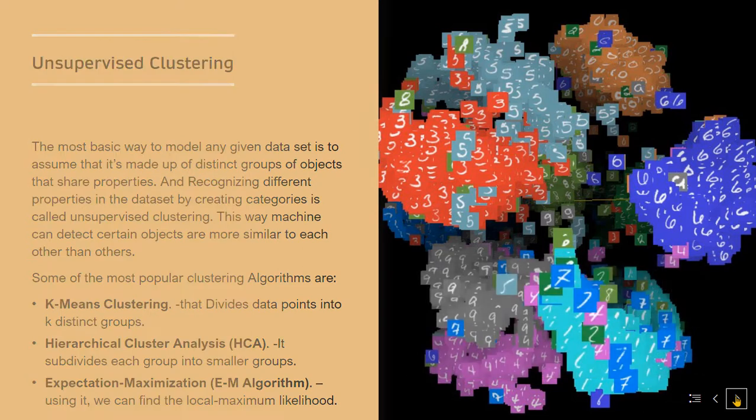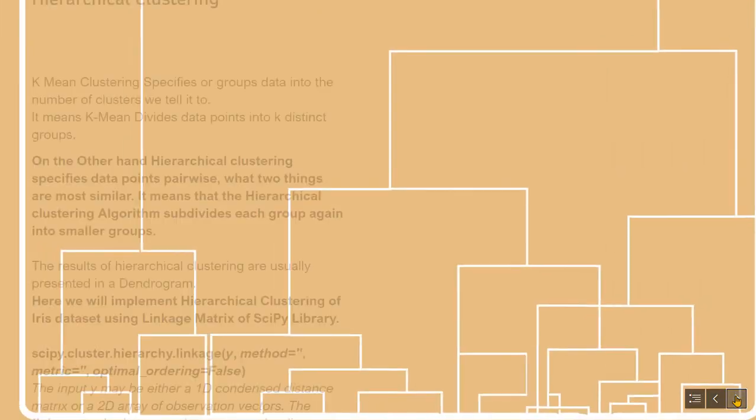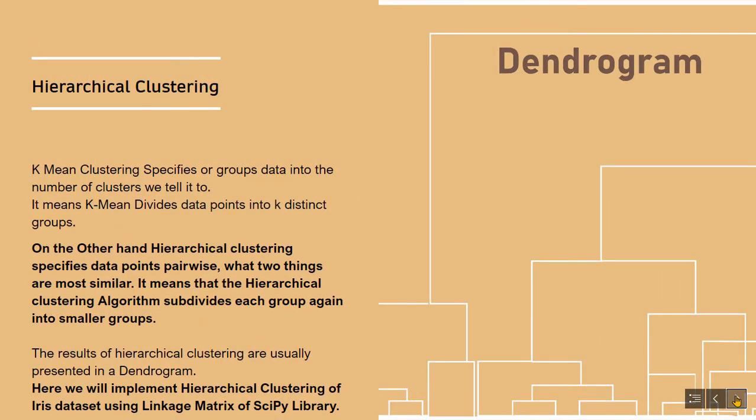Now let's look at hierarchical clustering, which differs from k-means clustering. K-means clustering assigns data points into a number of clusters that we specify, and is commonly used to automatically partition a dataset into k distinct groups.